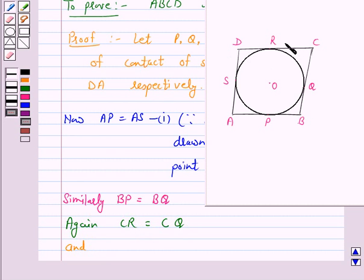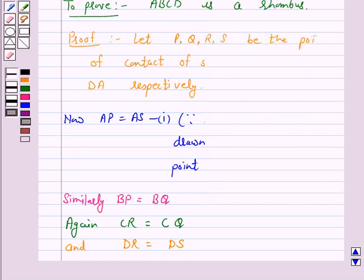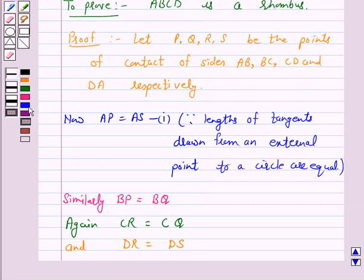And DR is equal to DS. Let us give this as number 2. This as number 3.